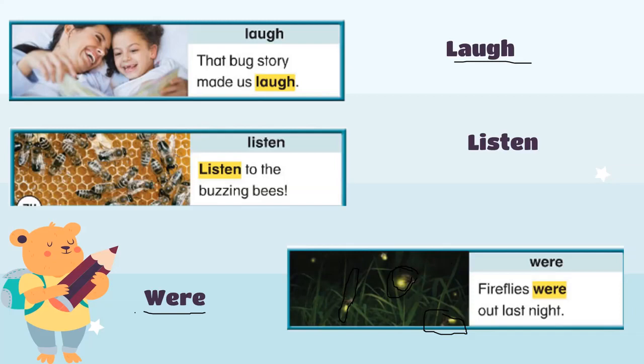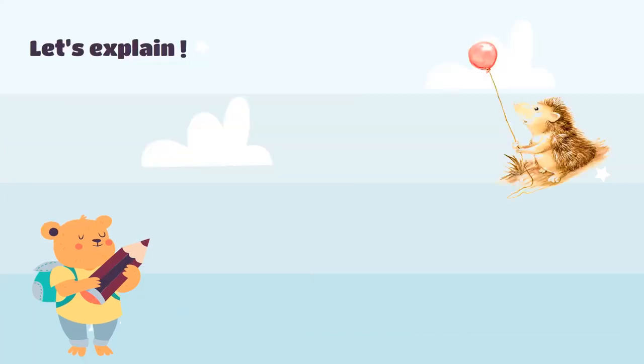If the sentence was about one firefly, we would say 'The firefly was out last night.' But because we have many, we say 'Fireflies were out last night.' We use 'were' for plurals. Like: 'My brother and sister were playing last night.' 'My friends were laughing last week.'